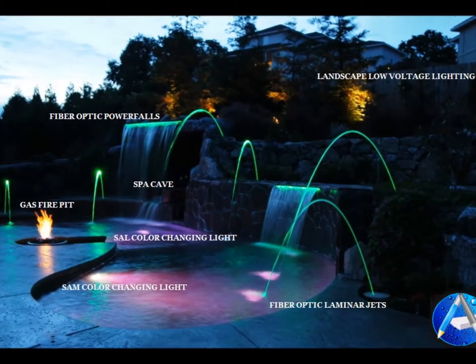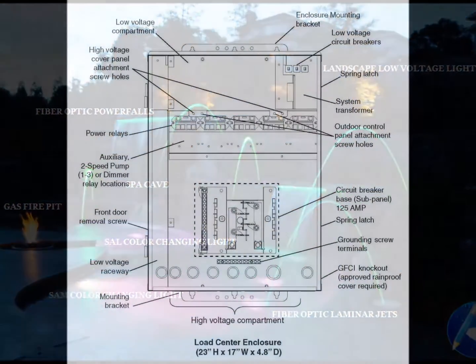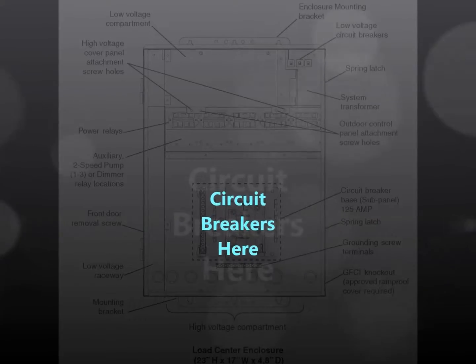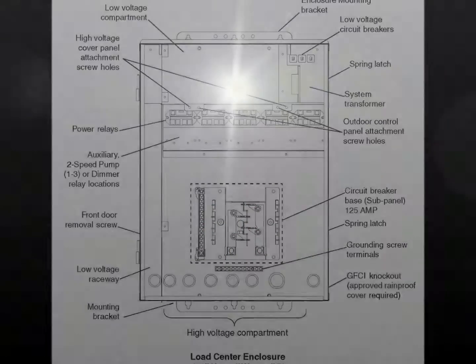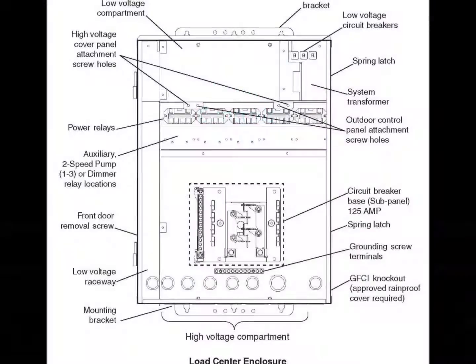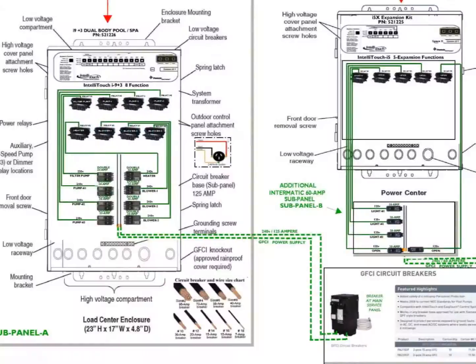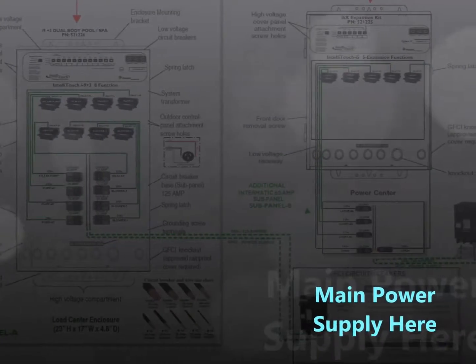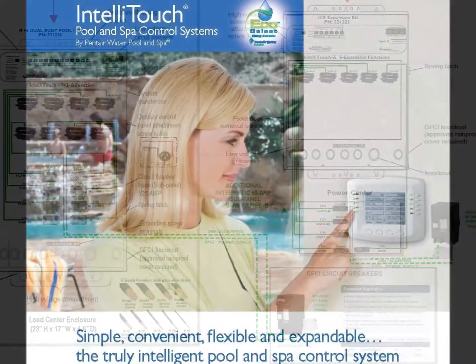The ability to program the desired operational function requires anticipating the necessary hardware that's needed, as well as circuit breaker capacity in combination with 240-volt or 120-volt relay controls. This is accomplished with a wiring diagram that exhibits how the power distribution is to route the main power from a selected control device.